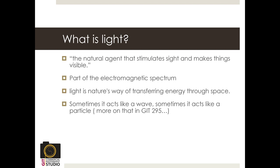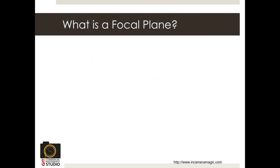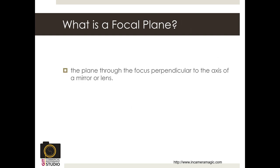Think about parking a white car next to a black car in the sun on a hot summer day — one gets much hotter. On a white car, light reflects; on a black car, the light gets absorbed and converted to thermal energy. That's how light energy works. For today, though, there's another class — GIT 295 — where you can learn more about light. What we're concerned with here is how light gets through your camera lens onto the sensor or focal plane.